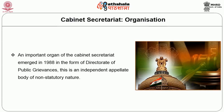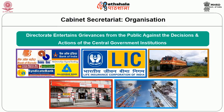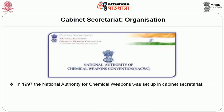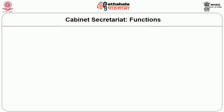An important organ of the cabinet secretariat emerged in 1988 in the form of the Directorate of Public Grievances. This is an independent appellate body of a non-statutory nature. The directorate entertains grievances from the public against the decisions and actions of central government institutions like public sector banks, LIC, railways, post offices, telecommunications, etc. In 1997, the National Authority for Chemical Weapons was set up in the cabinet secretariat. Recently, in 2009, the Performance Management Division was set up within the cabinet secretariat.